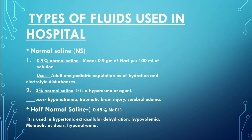0.9% normal saline means 0.9 grams of NaCl per 100 ml of solution — that is, 0.9 grams of sodium chloride dissolved in 100 ml of solution.